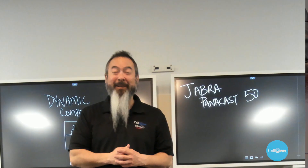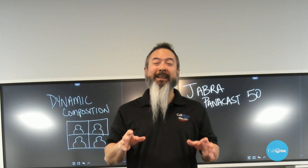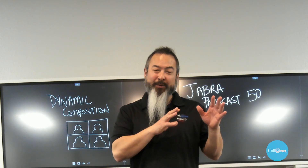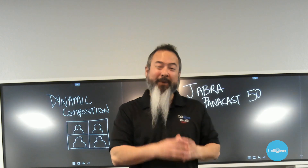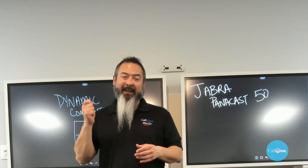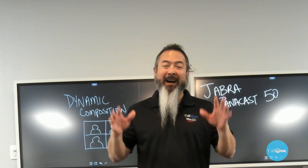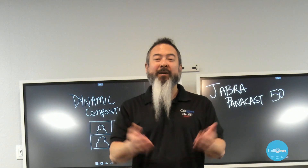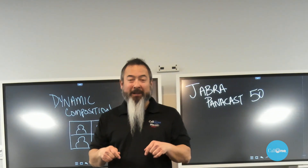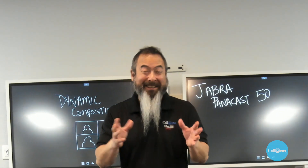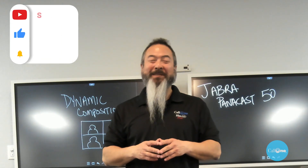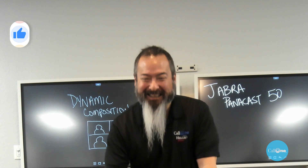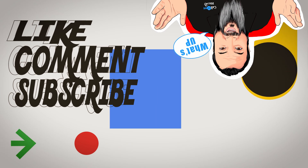There's a quick demonstration of Dynamic Composition and the Jabra Panicast 50. You select that via Jabra Direct, which is absolutely free, under the camera settings — just turn on Dynamic Composition. If you'd like to learn more about Jabra and their audio and video solutions for your organization, reach out to us. All our contact information is in the description box below. If you like this type of video, don't forget to like, subscribe, and comment below to let us know what you'd like to see.